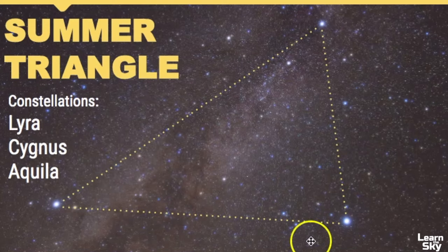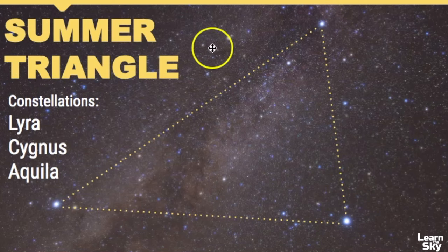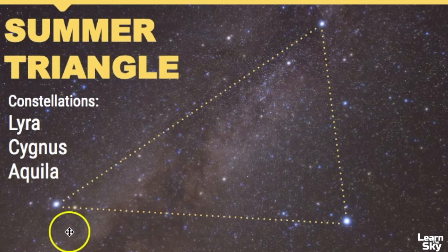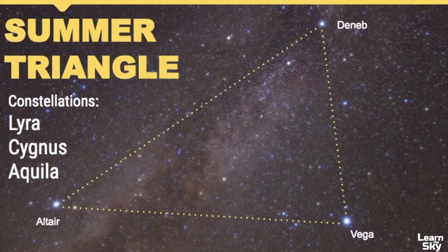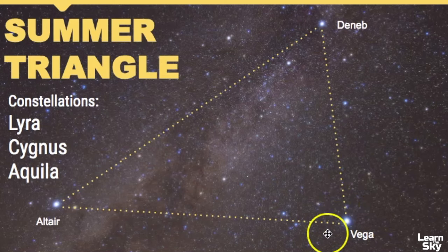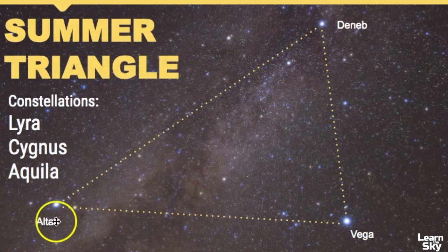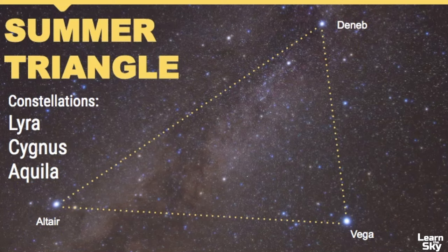We have Lyra right here, we have Cygnus making a giant cross in the sky, and then only a part of Aquila is really shown in this photograph. But I like this photo because the Summer Triangle really stands out. The names of these stars: we have Vega in Lyra, Deneb which is in the tail of the Swan, and Altair which is in Aquila the Eagle.